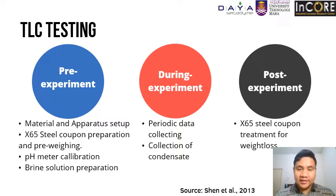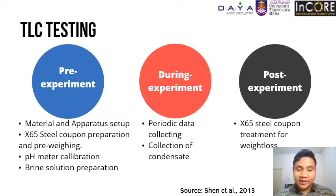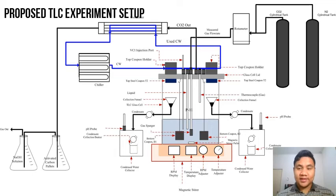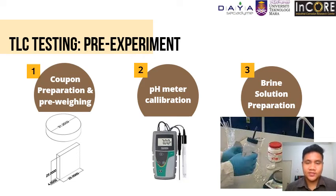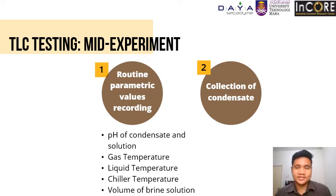For the TLC test, it is categorised into three periods: pre-experiment, during-experiment and post-experiment. Each phase has its own activities. The diagram shows the proposed TLC setup, which mimics the internal environment of an operational pipeline where TLC can occur. Pre-experiment activities involve coupon preparation and pre-weighing of the metal coupon, pH calibration and brine solution preparation. For the mid-experiment phase, carried out over five days, data listed under column one is periodically collected and the hydrocarbon and carbon dioxide are recovered.